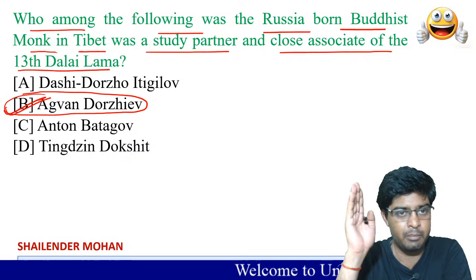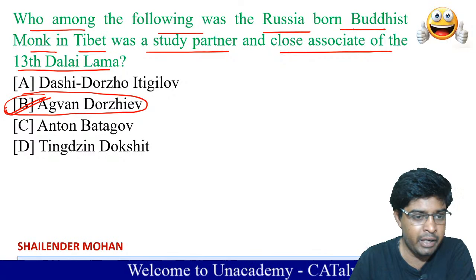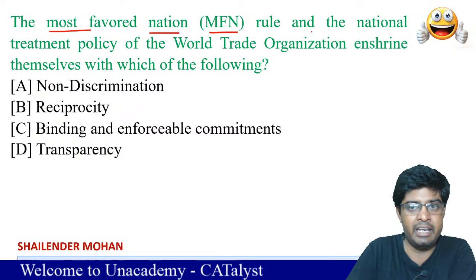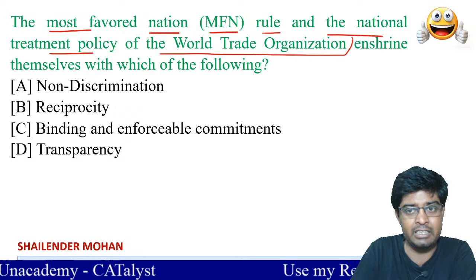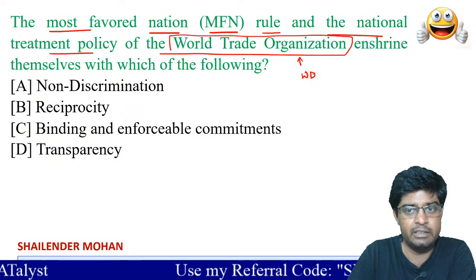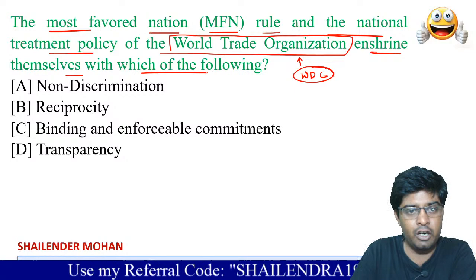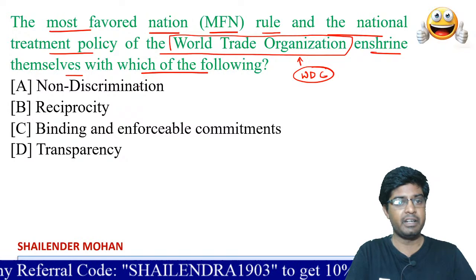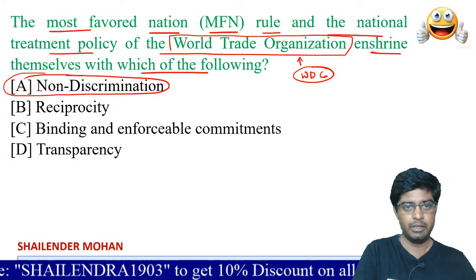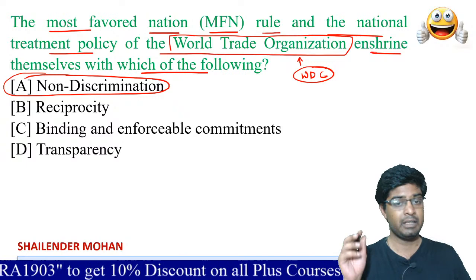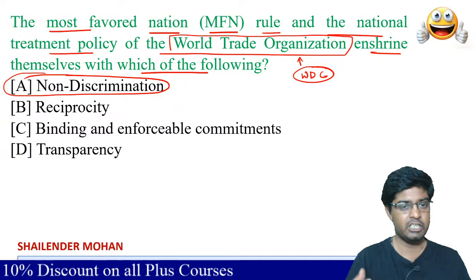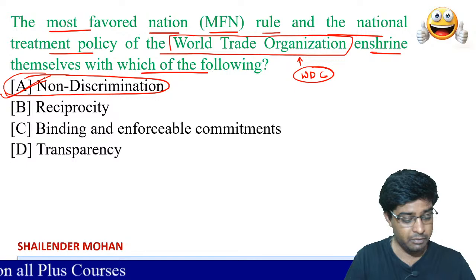The Most Favored Nation (MFN) rule is the national treatment policy of the World Trade Organization (WTO). The WTO headquarter is in Washington DC. The MFN principle means there is no discrimination — whatever treatment you give to your own country's businesses, you must give the same to others. So the answer is A option.